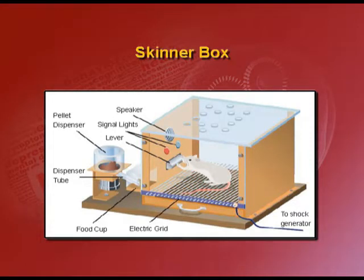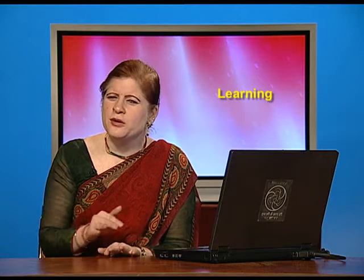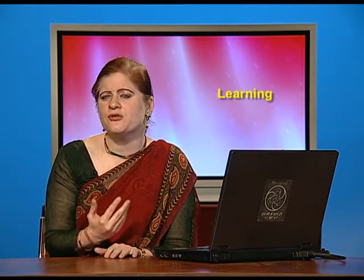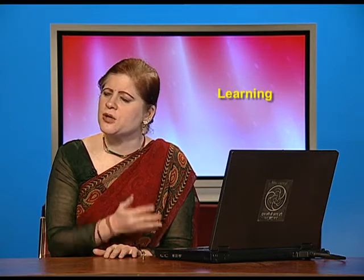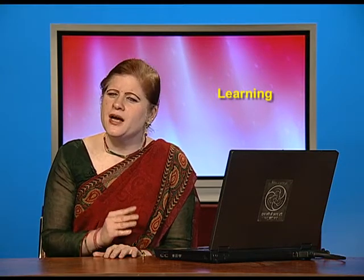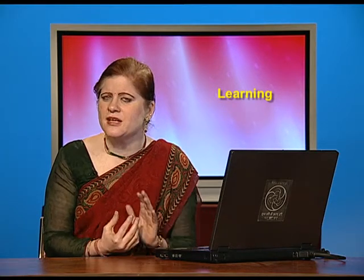Every time the rat accidentally happened to press the lever, a food pellet would fall. Pressing a lever is not part of the natural environment of a rat. The rat was kept hungry to be motivated enough to roam around doing activities in anticipation of food. Accidentally, the rat came and pressed the lever without knowing what would happen. After some trials, the rat came to associate the action of pressing the lever with getting food.